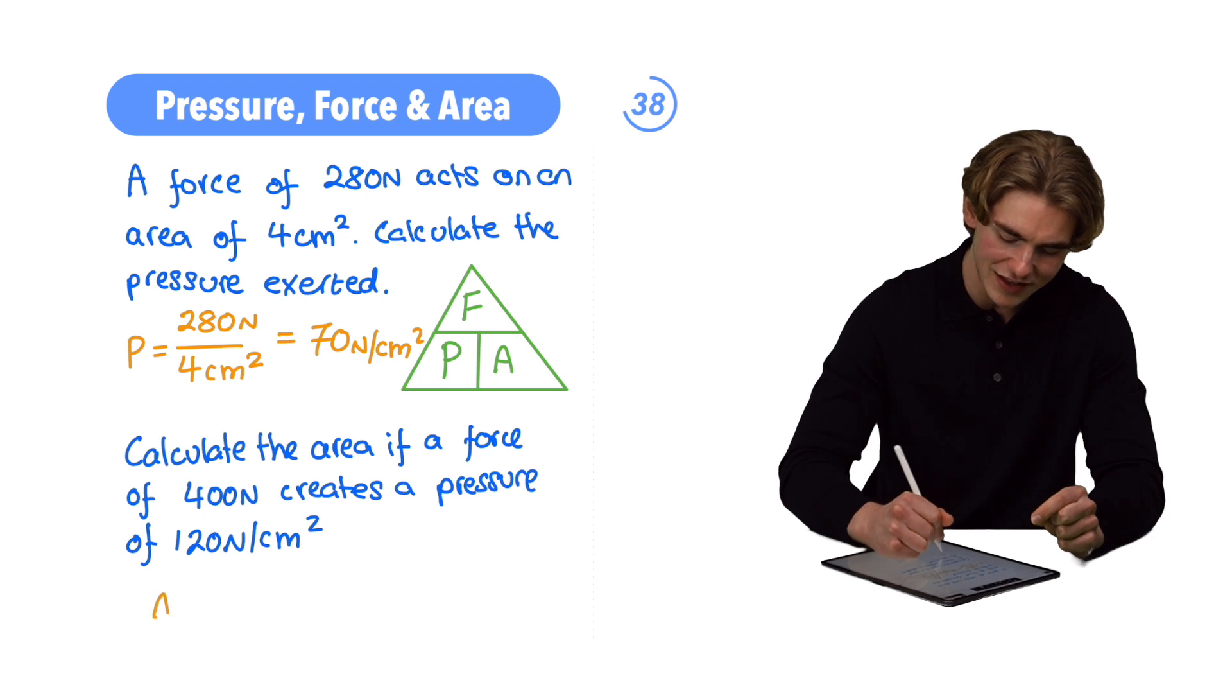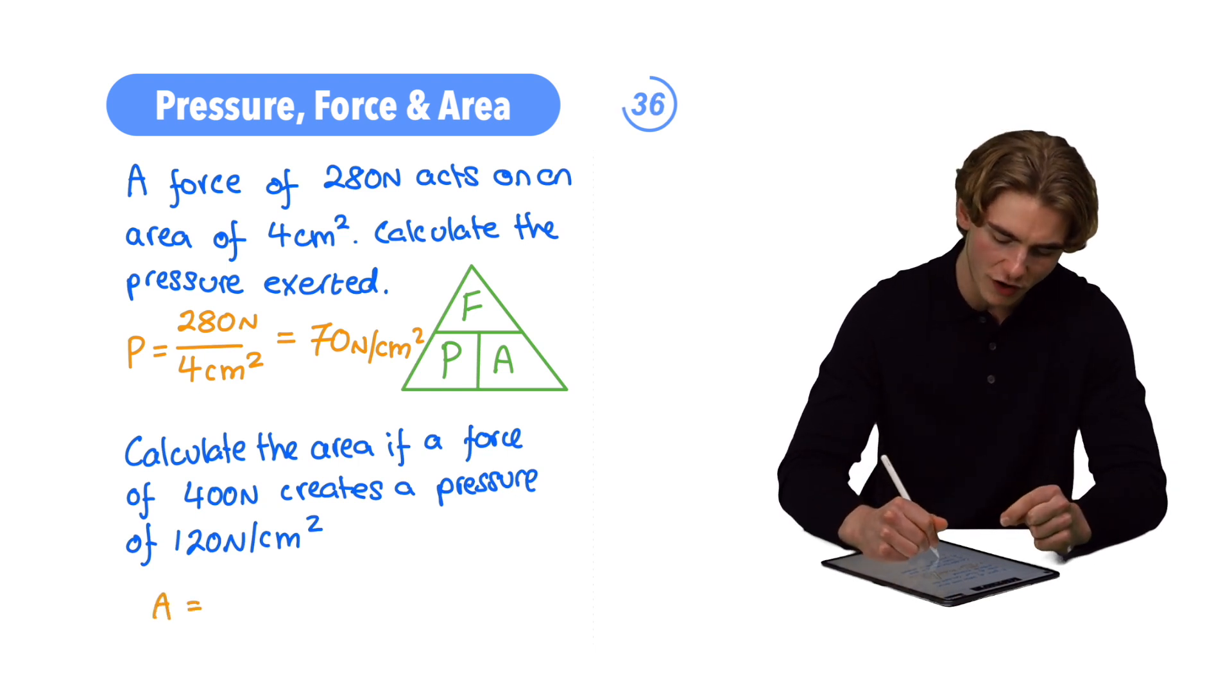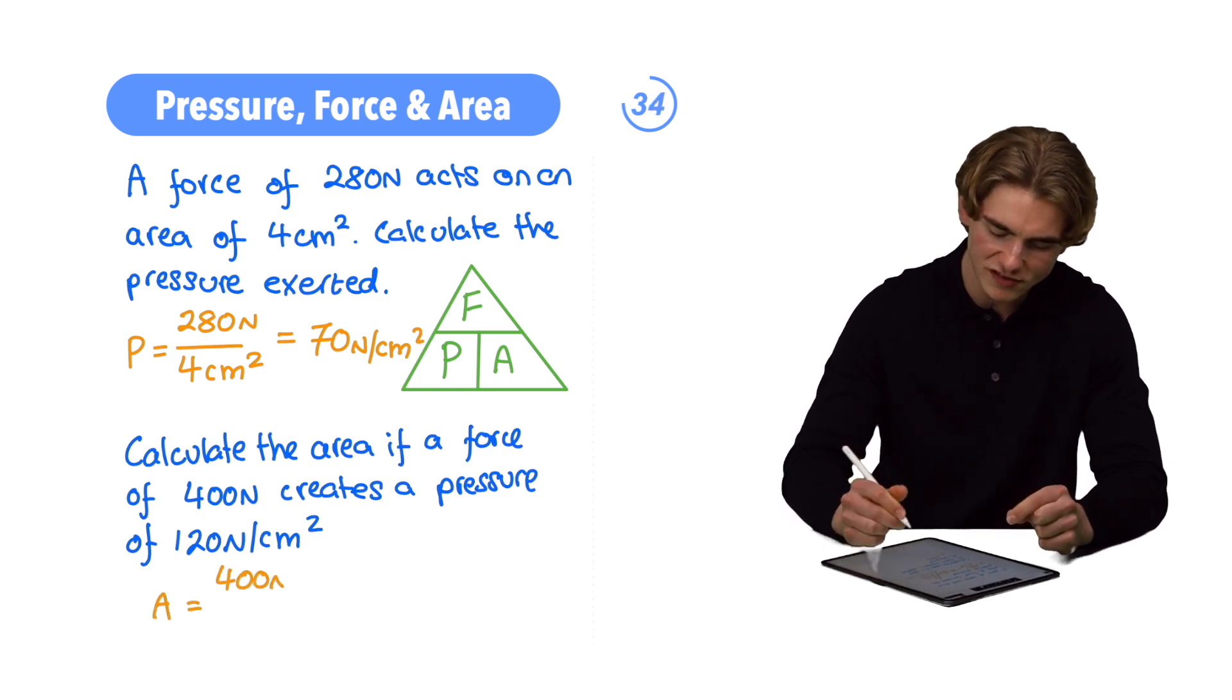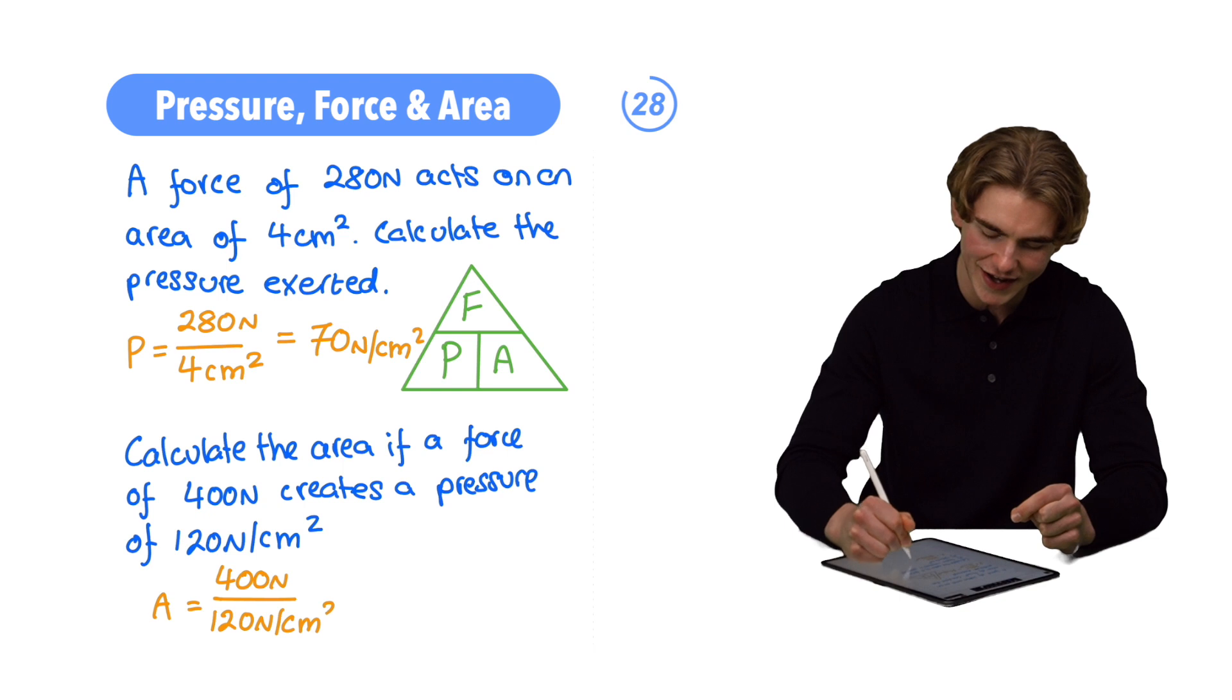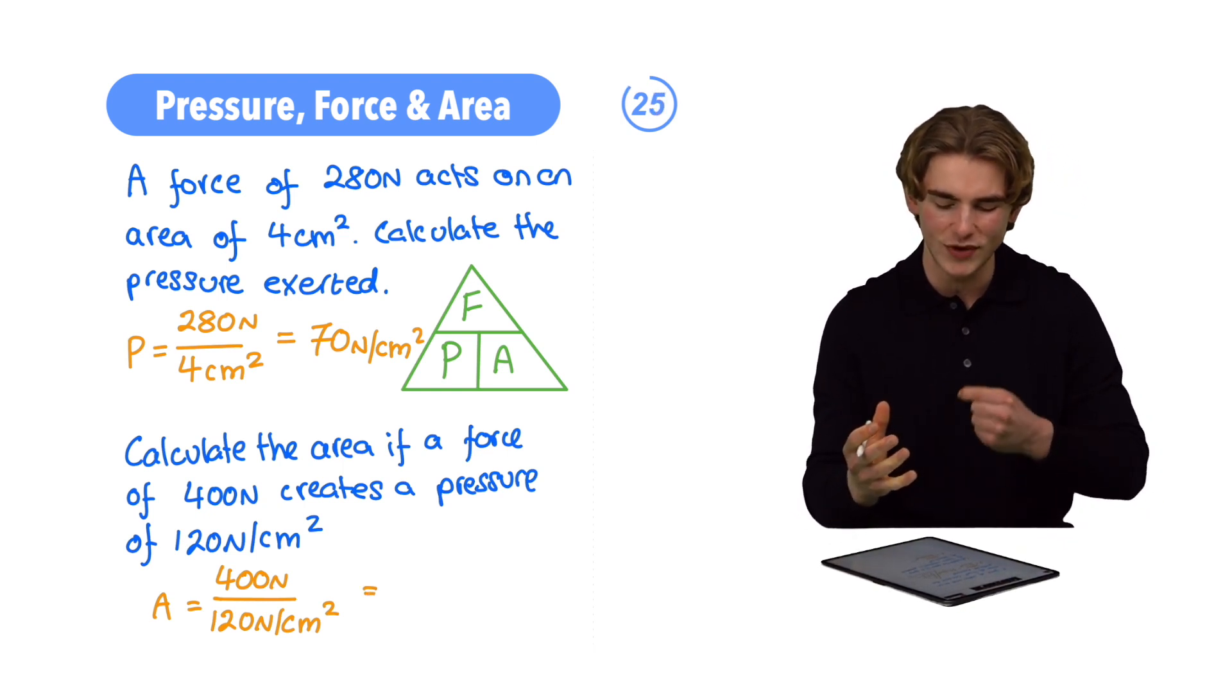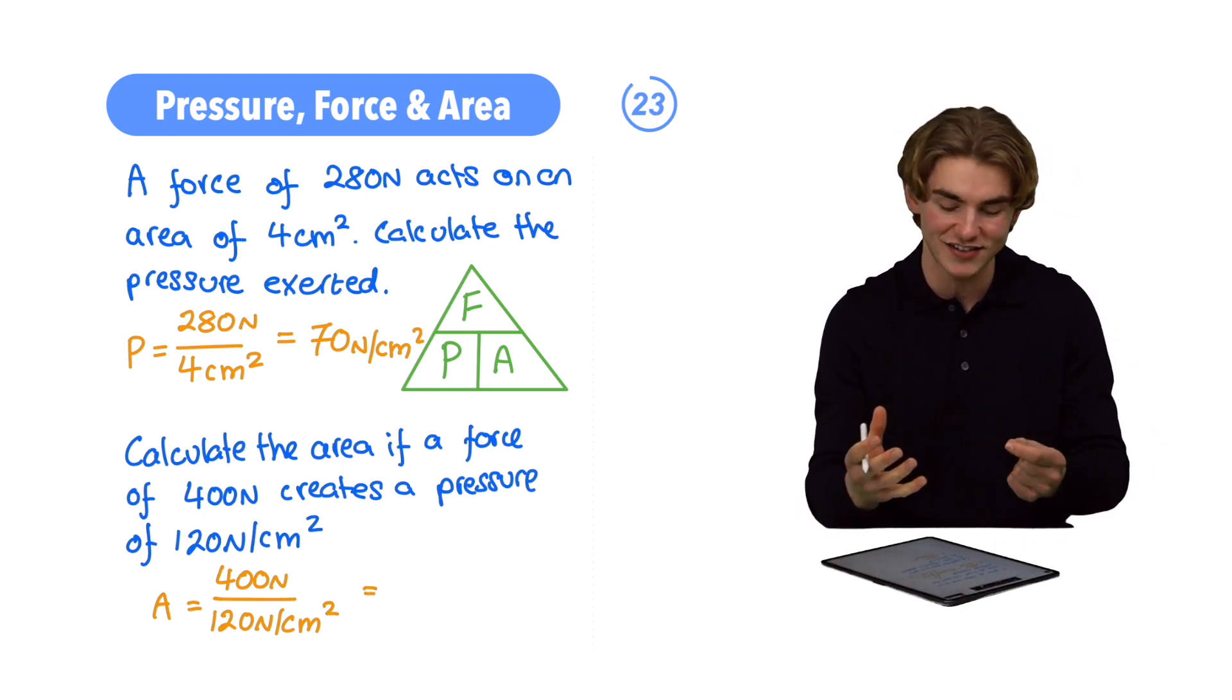What are we going to have? Our area equals our force of 400 Newtons divided by our pressure, which is 120 Newtons per centimeter squared. What's that going to give us? Well, 400 divided by 120 - we cannot do that easily. It's going to give us a decimal,